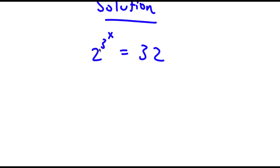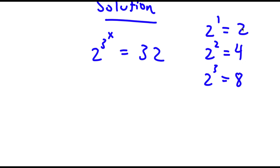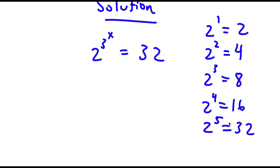Now, 32 — if we want to make these two the same base, I need to change 32 so that it has a base of 2. Well, 2 to the power of 1 is 2, 2 to the power of 2 is 4, 2 to the power of 3 is 8. So notice how for every added power the value is doubled: 2, then 4, then 8, then 16, and 16 times 2 is 32. So 2 to the power of 5 is 32. Now if I replace 32 with 2 to the power of 5, I get 2 to the power of 3 to the power of x is equal to 2 to the power of 5.